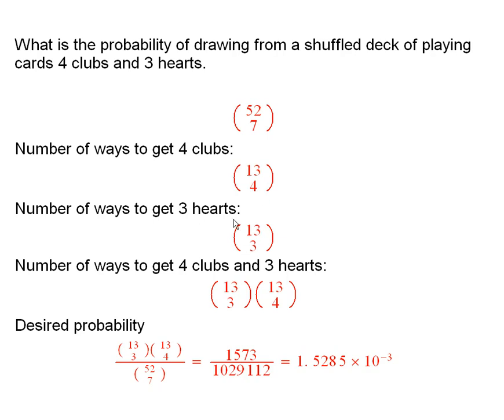And similarly, the number of ways to get three hearts is 13 taken three at a time. So the number of ways to get four clubs and three hearts would be the product of these. So therefore, the desired probability is the number of outcomes favorable to what you're looking for divided by the total possible number of things that could happen.